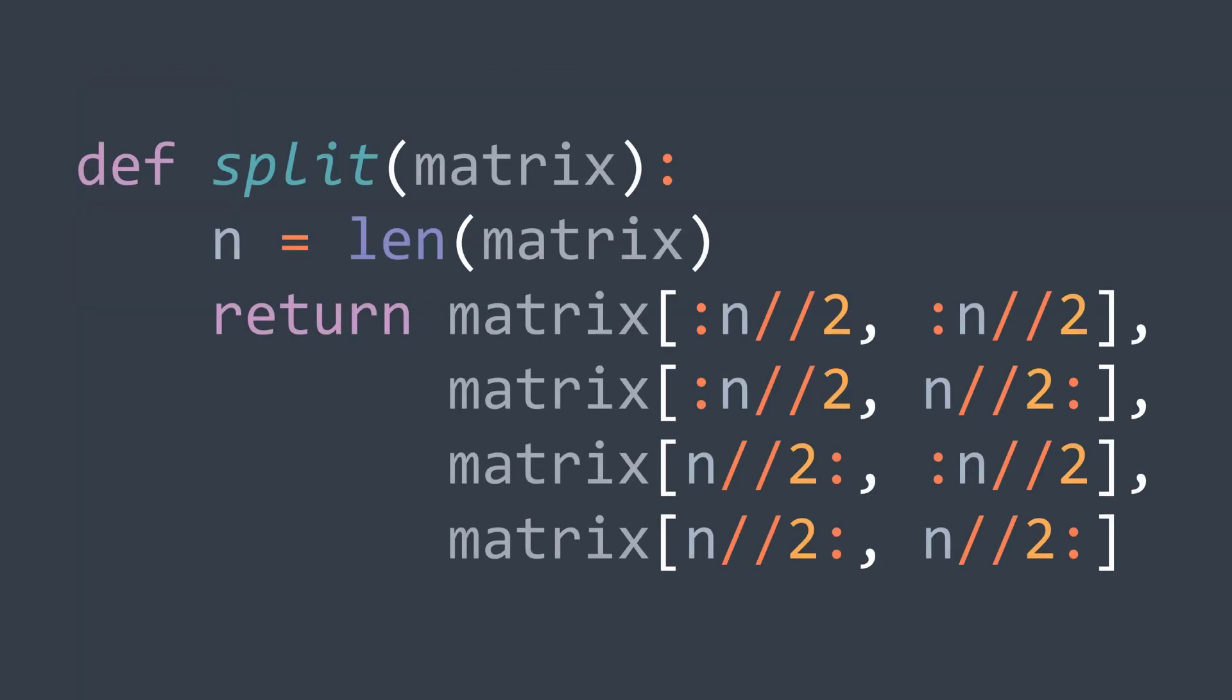In code, to split a square matrix into four parts, we get the size and then return four matrices: one where we take the first n/2 rows and the first n/2 columns, one where we take the first n/2 rows and the last n/2 columns, one where we take the last n/2 rows and the first n/2 columns, and one where we take the last n/2 rows and the last n/2 columns.